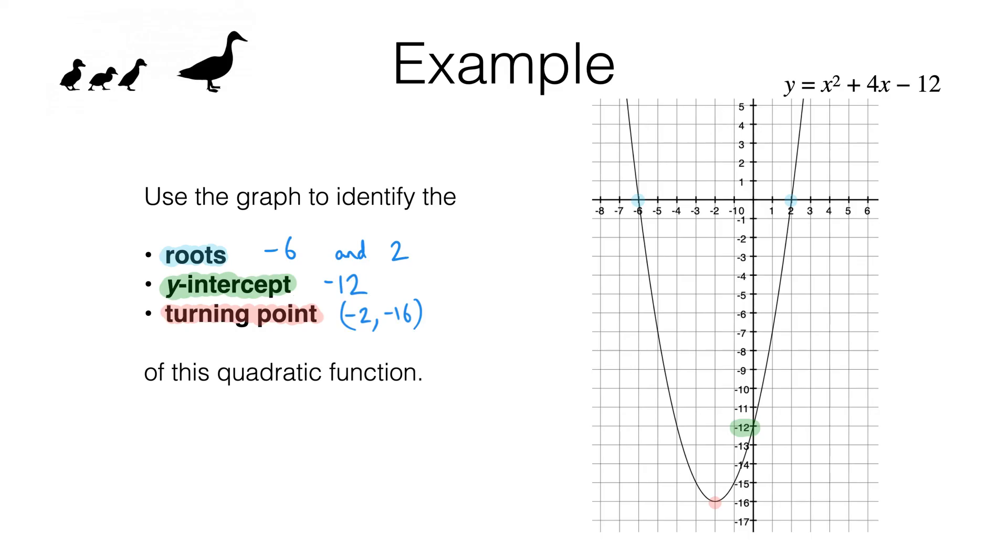So to summarize, we have our y-intercept here, that's negative 12, that is where the curve crosses the y-axis. We have our turning point down here, that is where the gradient is positive on one side and negative on the other. In this case we've got the negative gradient on the left and the positive gradient on the right. Finally we had our roots, and those are simply the places where the curve meets the x-axis.